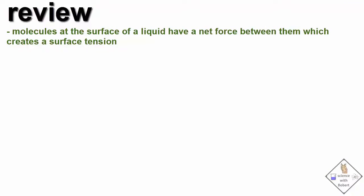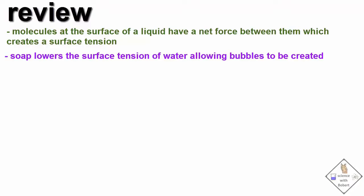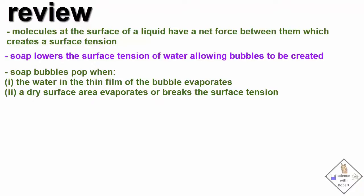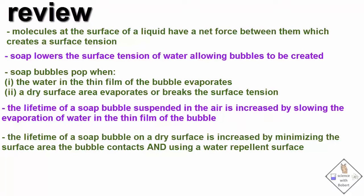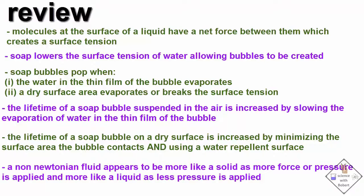Let's review. All liquids have a surface tension because the liquid molecules at the surface are not completely surrounded by other liquid molecules, and this creates a net force or tension between the surface molecules of the liquid. Soap lowers the surface tension of water, allowing bubbles to be created. Soap bubbles pop when the water in the thin film of the bubble evaporates, or when a dry surface breaks through the surface tension of the bubble. The lifetime of a soap bubble suspended in the air is increased by slowing the evaporation of water in the thin film. The lifetime of a soap bubble on a dry surface is increased by minimizing the surface area the bubble comes into contact with, and using a water-repellent surface like cotton. A non-Newtonian fluid acts more like a solid as more force is applied to it, and more like a liquid as less force is applied to it.